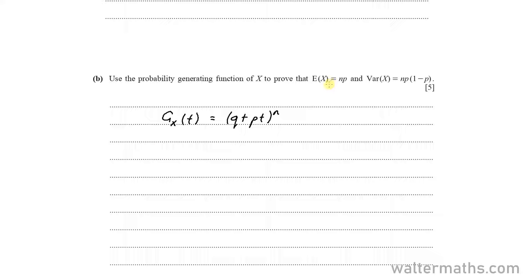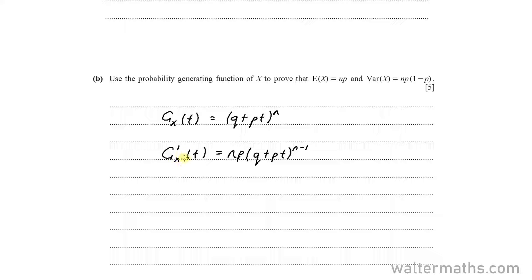For expectation, we will need to find the first derivative, so G dash of T means we are differentiating with respect to T. We can use the chain rule — bring down the N, differentiate to get P, then write down Q plus PT to the power of N minus 1. So this is G dash of T.